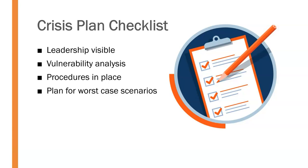We need to plan for the worst-case scenarios. You hope for the best and plan for the worst. What are our procedures if the worst happens? How do we communicate that to the public? How do we protect people's safety and lives, and also protect our organization's reputation and viability to continue? We need to plan for worst-case scenarios, have those procedures in place, identify vulnerabilities early through analysis, and then when a crisis does happen, have our leadership visible and out front.